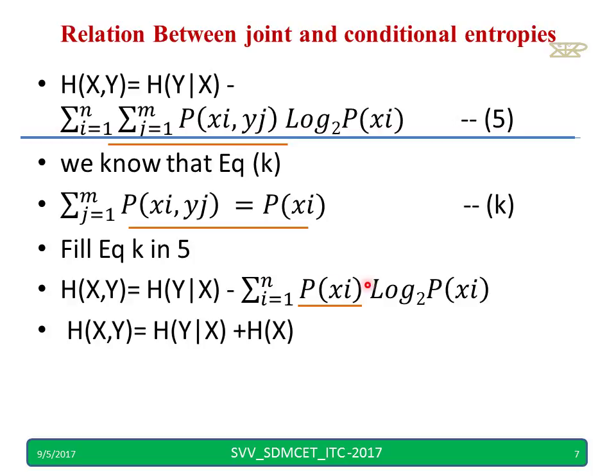Now, this is nothing but what? Pi log pi. It is H or entropy. Hence, H(X,Y) = H(Y|X) + H(X). Hence, it is proved.